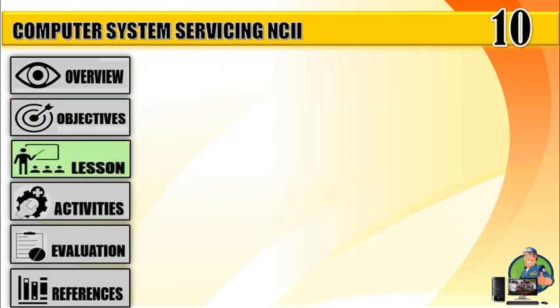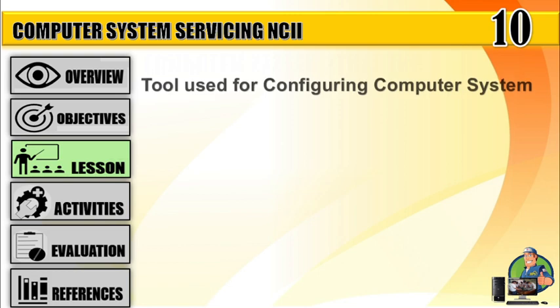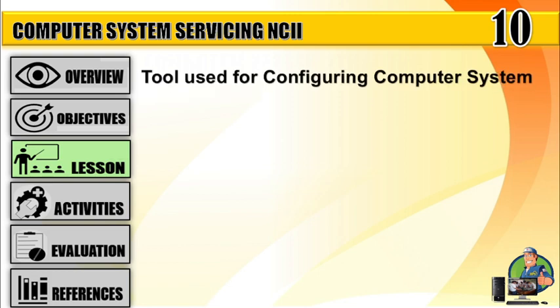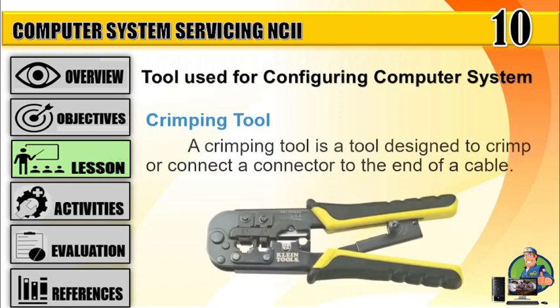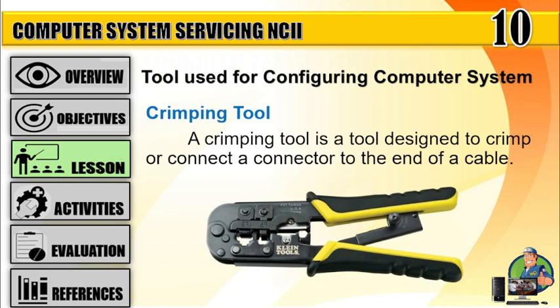The tools used for configuring computer systems. Number 1: Crimping tool — a crimping tool is a tool designed to crimp or connect the connector to the end of a cable.